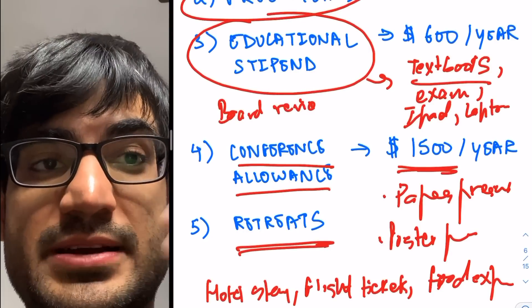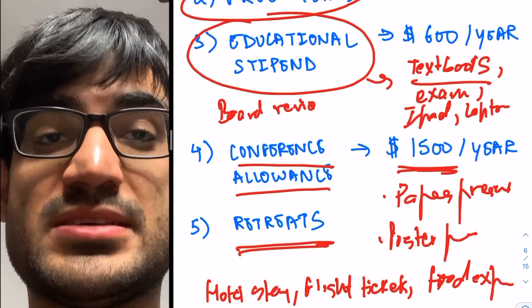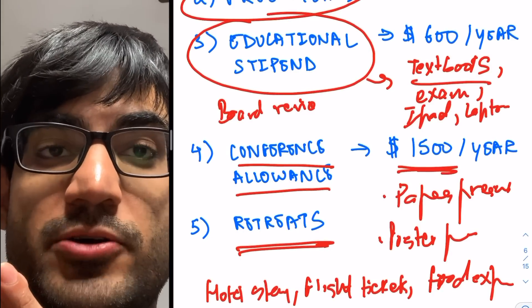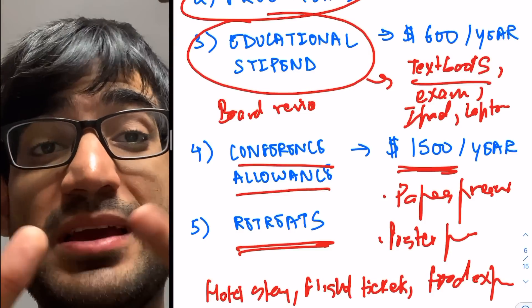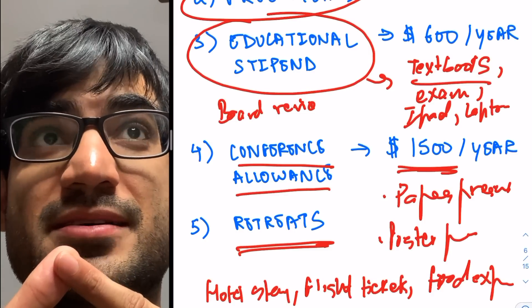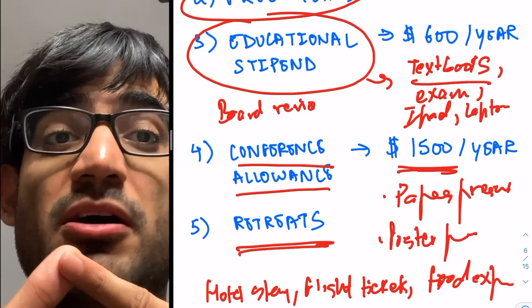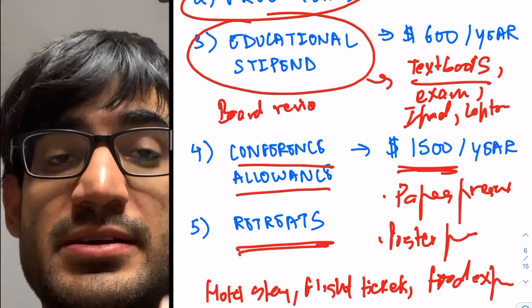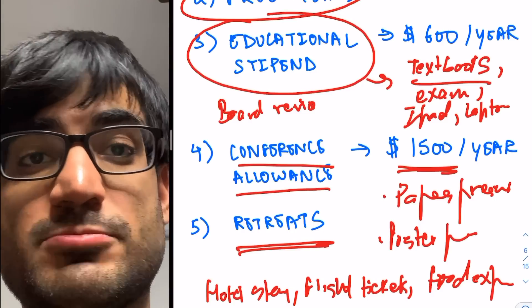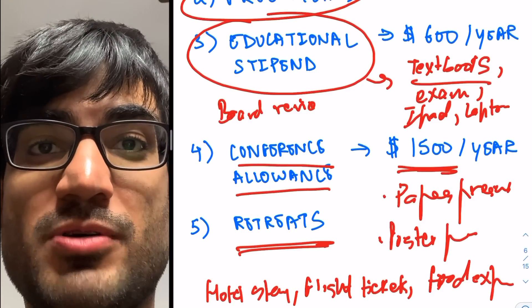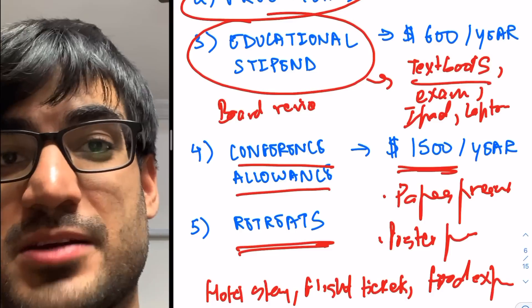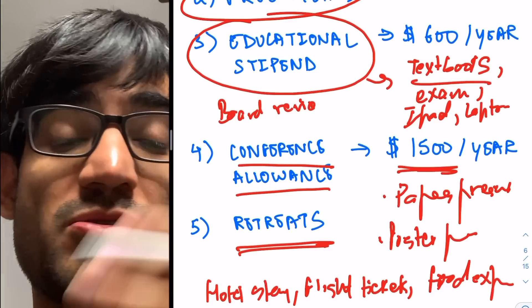So you also get retreats. What I mean by retreats is, to prevent burnout in residency, a lot of programs have these retreats planned out. It can be annual retreats. It can be retreats twice in a year. Or it could be monthly retreats. So there are so many retreats that you can go on, where the residency program takes you for certain activities, like paintball, or they take you out on a lake, or any nearby destination where you guys can relax.